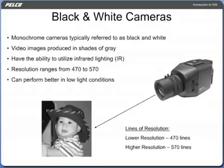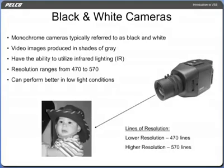Monochrome cameras are typically referred to as black and white because the video image they produce is in shades of grey. Only black and white CCD cameras or new day-night cameras have the ability to utilize infrared lighting. Black and white camera lines of resolution range from 470 for lower resolution cameras to 570 for higher resolution cameras. Even without infrared lighting, a black and white camera will perform better in low light conditions than a color camera equipped with a comparable CCD imager, lens, and quality of manufacture.